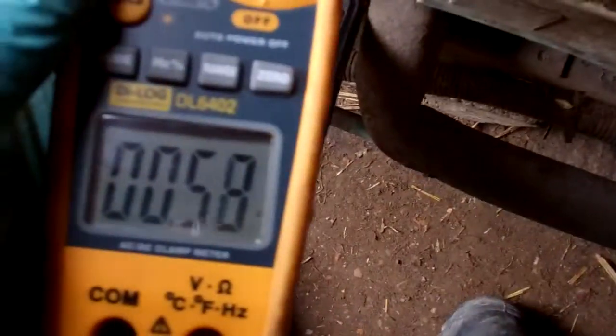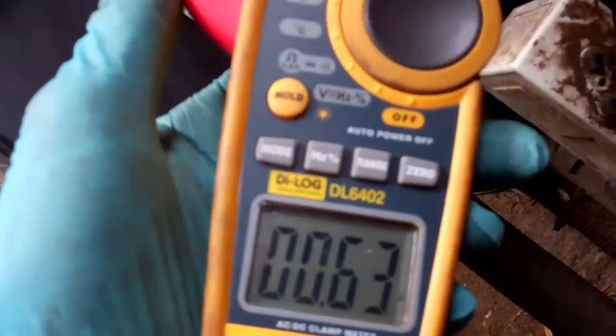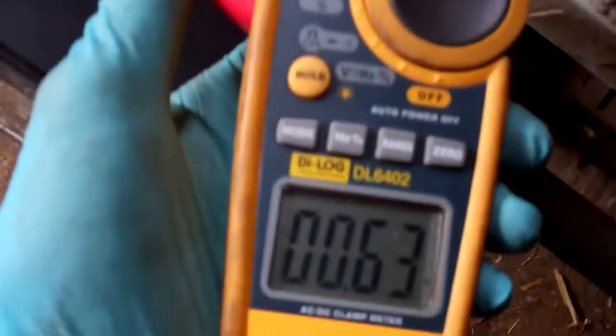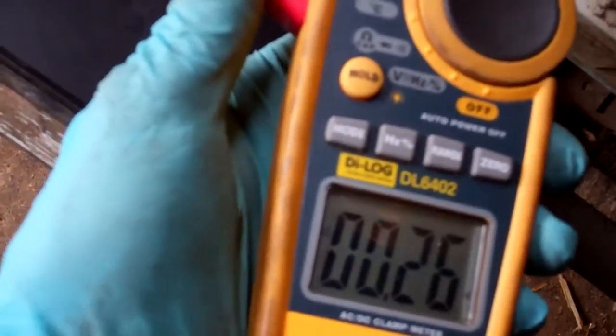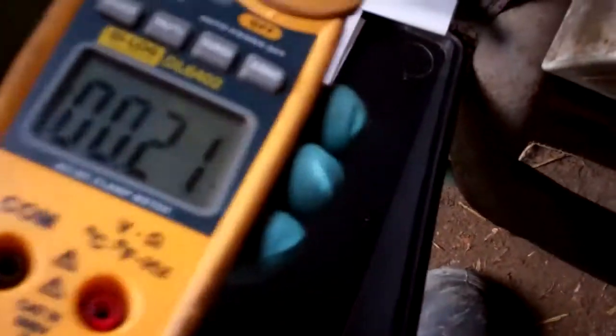1.5 amps, that's about what the old one was drawing I think. It's on the live. It's always worth checking the start winding. Same as checking if one of the capacitor wires should be the same.